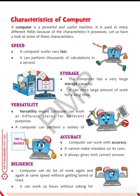Our fourth characteristic of a computer is accuracy. Accuracy means it cannot make any mistakes — it does its work very perfectly, except when we give wrong input. If we give wrong input, then only it gives us a wrong answer. Otherwise, the computer can only perform accurately.